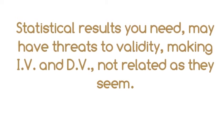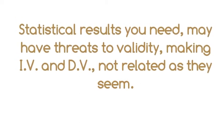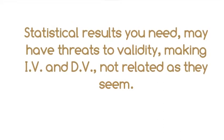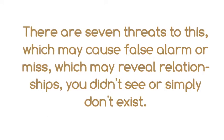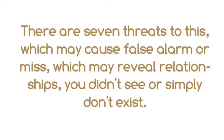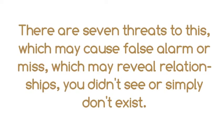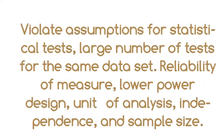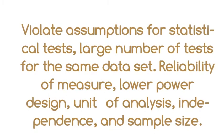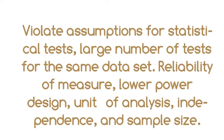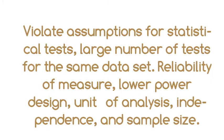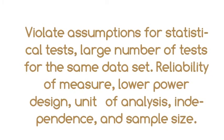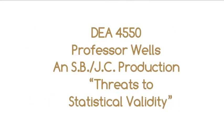Statistical results you need may have threats to validity, making the IV and DV not related as they seem. There are seven threats to this, which may cause false alarms or missed effects, reveal relationships you didn't see, or violate assumptions for statistical tests. These include: large number of tests for the same data set, reliability of measures, low power design, unit of analysis, independence, and sample size.